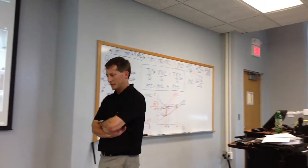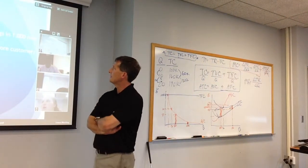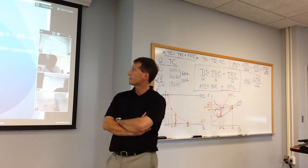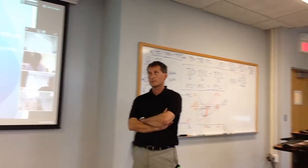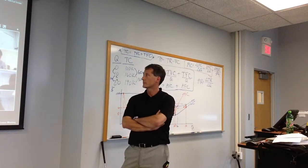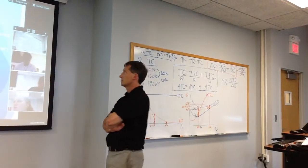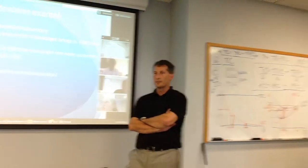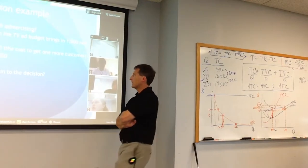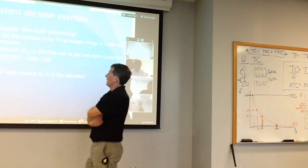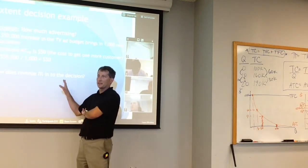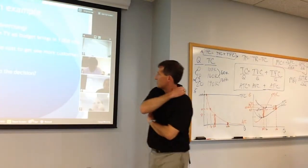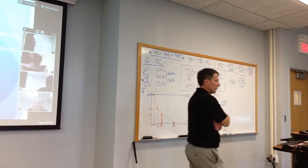It depends on if you're typically a $10 per plate restaurant — it's not worth that cost because it costs you $50 to get that person in the door and they're only going to spend $10. The revenue needs to match or exceed your additional cost. Your additional revenue needs to at least be as much as your additional cost if you decide to go with that option.